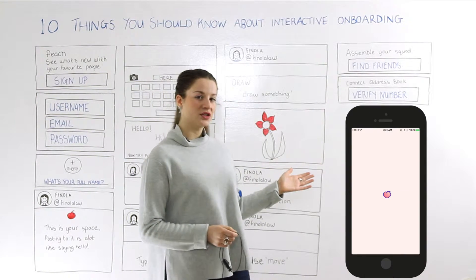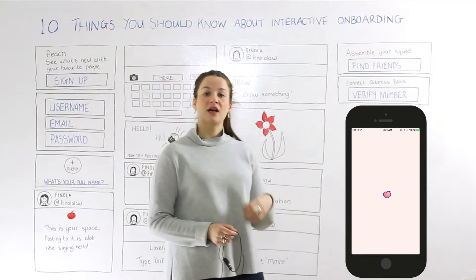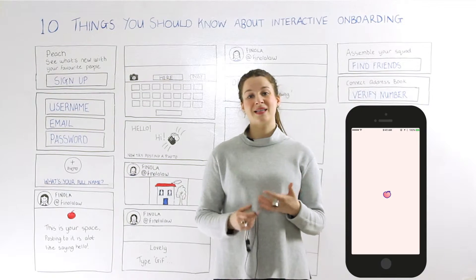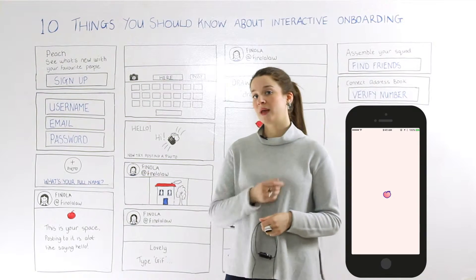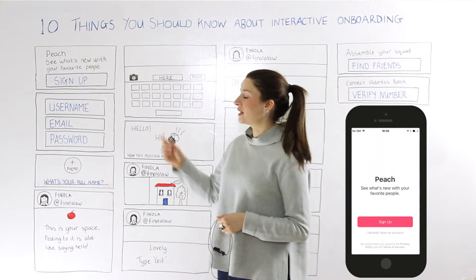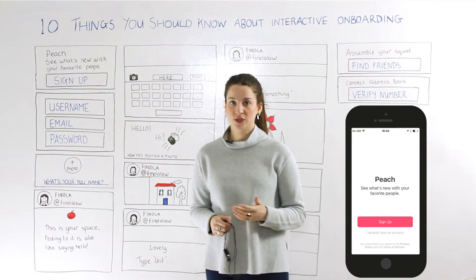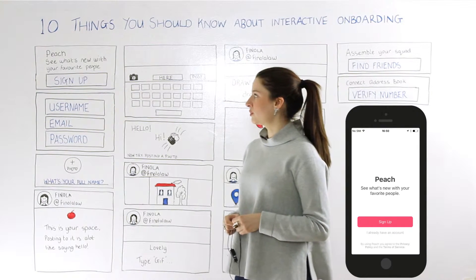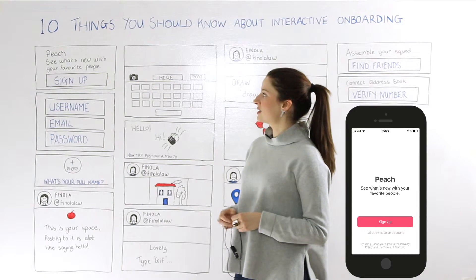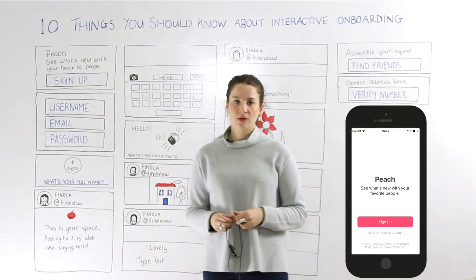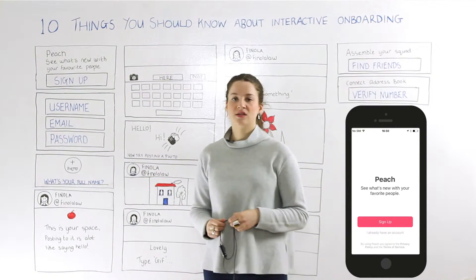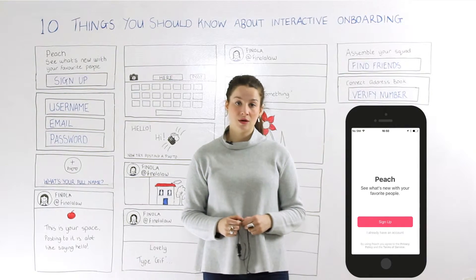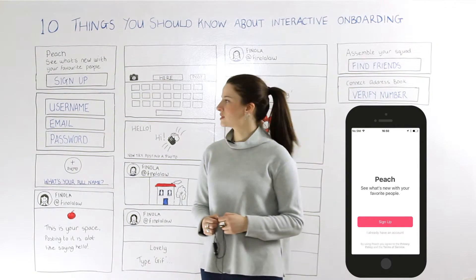The first screen shows you an icon of a peach — that's their branding — but when you move from that page you're then seeing the value proposition of the app, which we spoke about in other videos. It's a really strong value proposition: it says 'see what's new with your favorite people,' and then you have the option to sign up or log in if you already have an account.